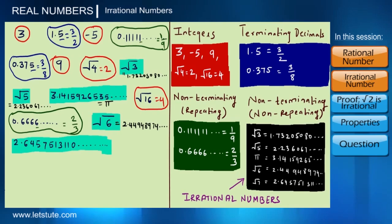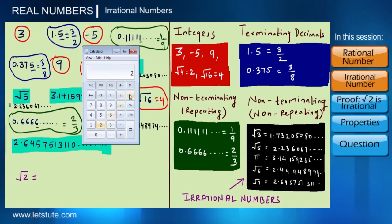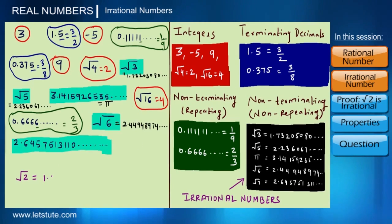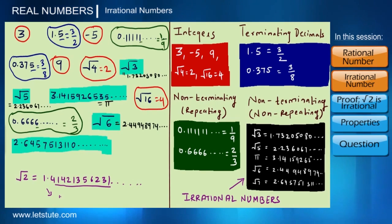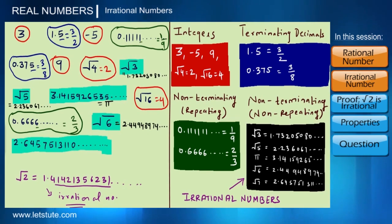Using a calculator, we can easily identify whether a square root number is irrational or rational. For example, to check if root 2 is rational or irrational: the value of root 2 = 1.41421356231... So root 2 is an irrational number because its value is non-terminating and non-repeating. This is one way of identifying whether a number is irrational or rational.